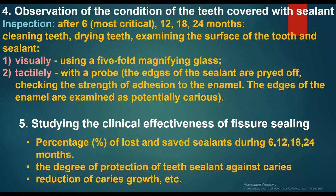Observation of the condition of teeth covered with sealant: inspection after 6, 12, 18, and 24 months. Procedure: clean the teeth, dry them, and examine the surface of the tooth and sealant visually using a 5-fold magnifying glass, and tactilely with a probe — the edges of the sealant are pried off to check the strength of adhesion to the enamel.